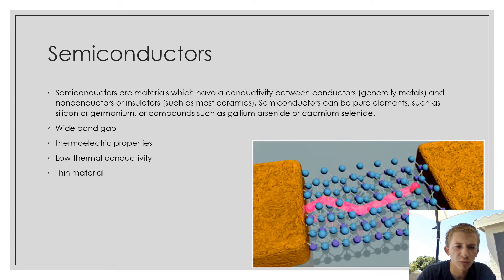Semiconductors are materials that have a conductivity between conductors and non-conductors or insulators. They can be pure elements, such as the most common would be silicon or germanium, and they can also be compounds. In this case, we're using the chalcogens. The chalcogens have wide band gaps, and some of their thermoelectric properties are that they have a low thermal conductivity. They're also very thin, which is important because usually the thinner the better when it comes to semiconductors.